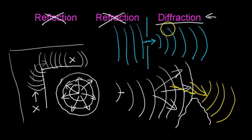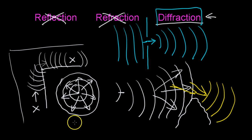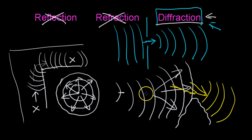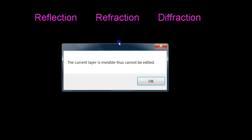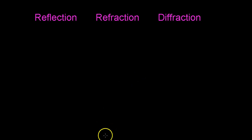I know diffraction might be a little bit harder to understand, so I'm going to try to find a couple more videos to help you with this one, and I'll put them in the description box — maybe they can elaborate and explain it better. So we have reflection, refraction, and diffraction. Thanks for watching — look for those extra links in the description box.